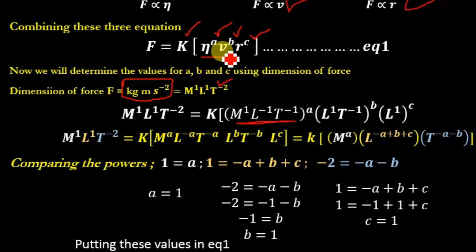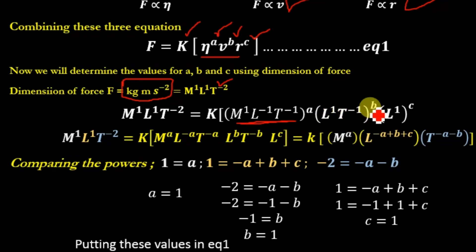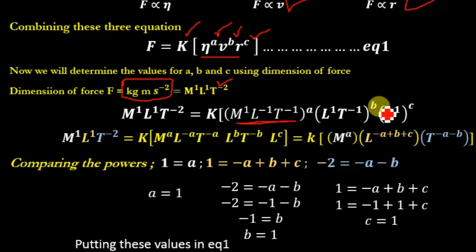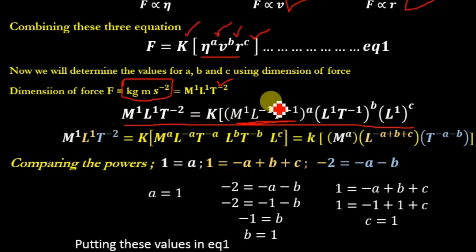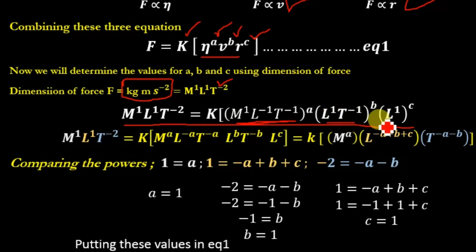For velocity v, we know its dimensions are L/T, so L¹T⁻¹ raised to power B. For radius, the dimension is simply L¹ raised to power C. Now, multiplying each power with its respective term — A with viscosity, B with velocity, and C with radius — and rearranging the equation.